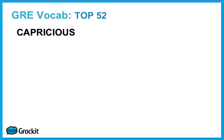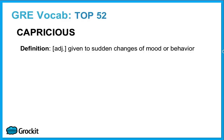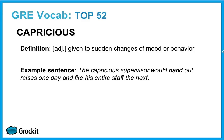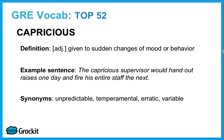Our twenty-first word is capricious. Capricious is an adjective. It means given to sudden changes of mood or behavior. The capricious supervisor would hand out raises one day and fire his entire staff the next. Synonyms: unpredictable, temperamental, erratic, and variable.